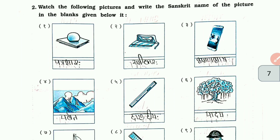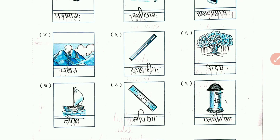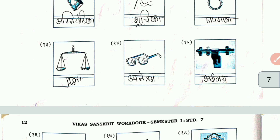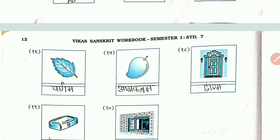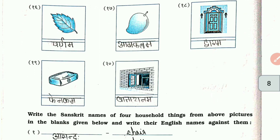Question number 2: watch the following pictures and write the Sanskrit name of the picture in the blanks given below. Number 1: Kanduka. Number 11: Succa. Number 12: Jafmala. Number 13: Dula. Number 14: Ubnitram. Number 15: Akralam. Number 16: Parham. Number 17: Amrafalam. Number 18: Dwaram. Number 19: Pre-Income. Number 20: Vatavanam.